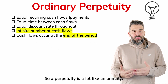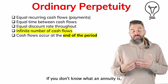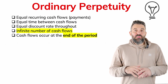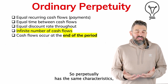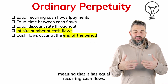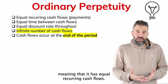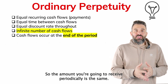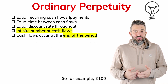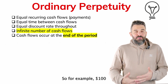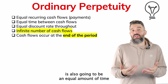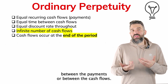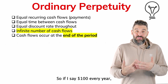A perpetuity is a lot like an annuity — if you don't know what an annuity is, make sure you watch the video I made on that. A perpetuity has the same characteristics, meaning that it has equal recurring cash flows. So the amount you're going to receive periodically is the same — for example, $100 every year.